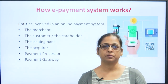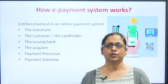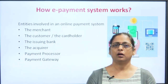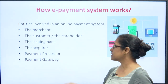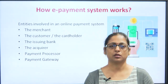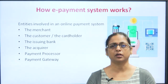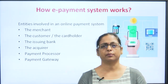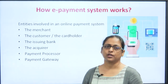The first is the merchant — the vendor from whom we are basically purchasing the product, which you can understand as the seller, distributor, or supplier of the good. Then obviously the second is the customer or the cardholder — someone who is doing the payment. The person from whose account the transaction is going to happen.